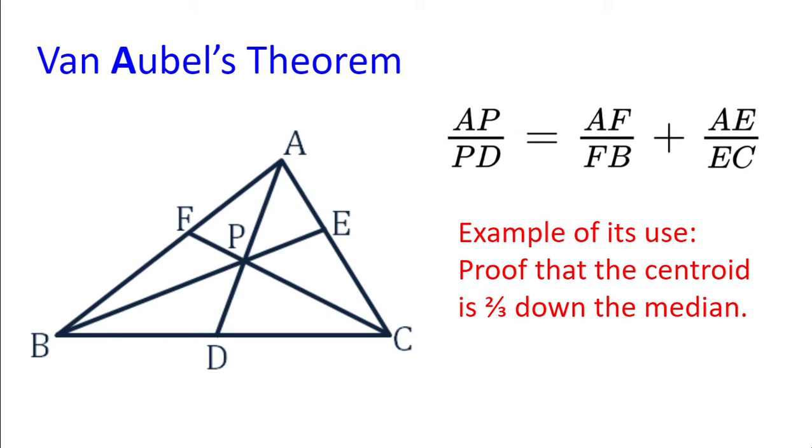So AP equals two multiplied by PD. So you get a two to one ratio which is why P will be two thirds of the way down AD.